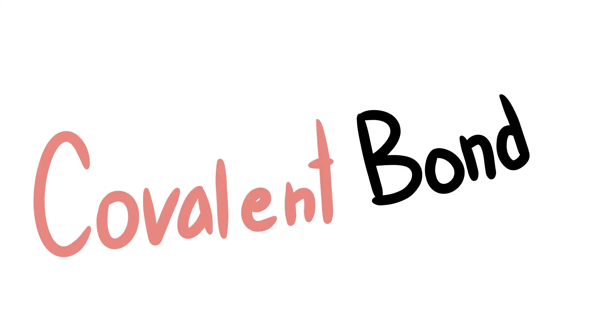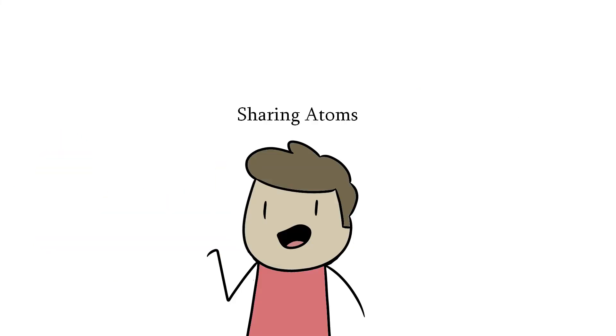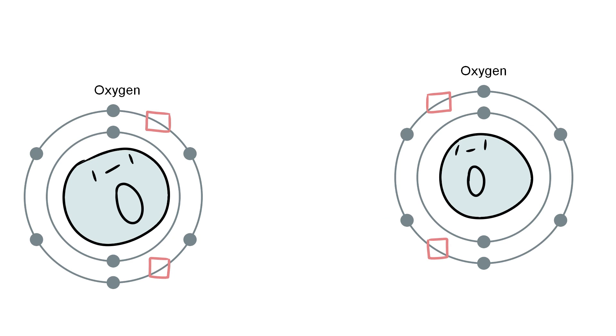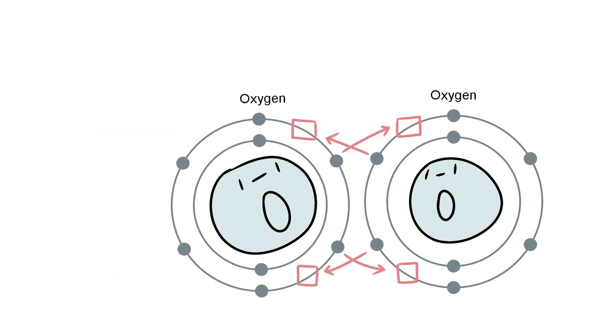The next type of bond is covalent. This is the sharing of electrons because sharing is caring. These only occur with nonmetals. Let's take two oxygen atoms. Since they both need two, they can both share their electrons. Boom. Sharing is caring.